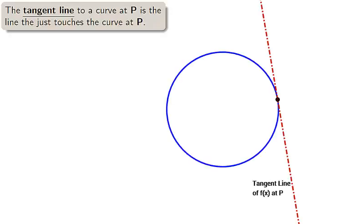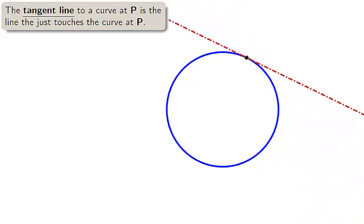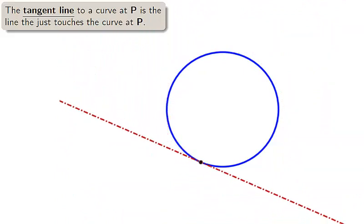Calculus has many complex applications that stem from a single concept known as the limit. To introduce limits, we look towards the tangent problem. The word tangent is derived from a Latin word meaning touching. A tangent line to a curve at a point P is a line that touches the curve, not passing through, and only touches the point P on the curve.